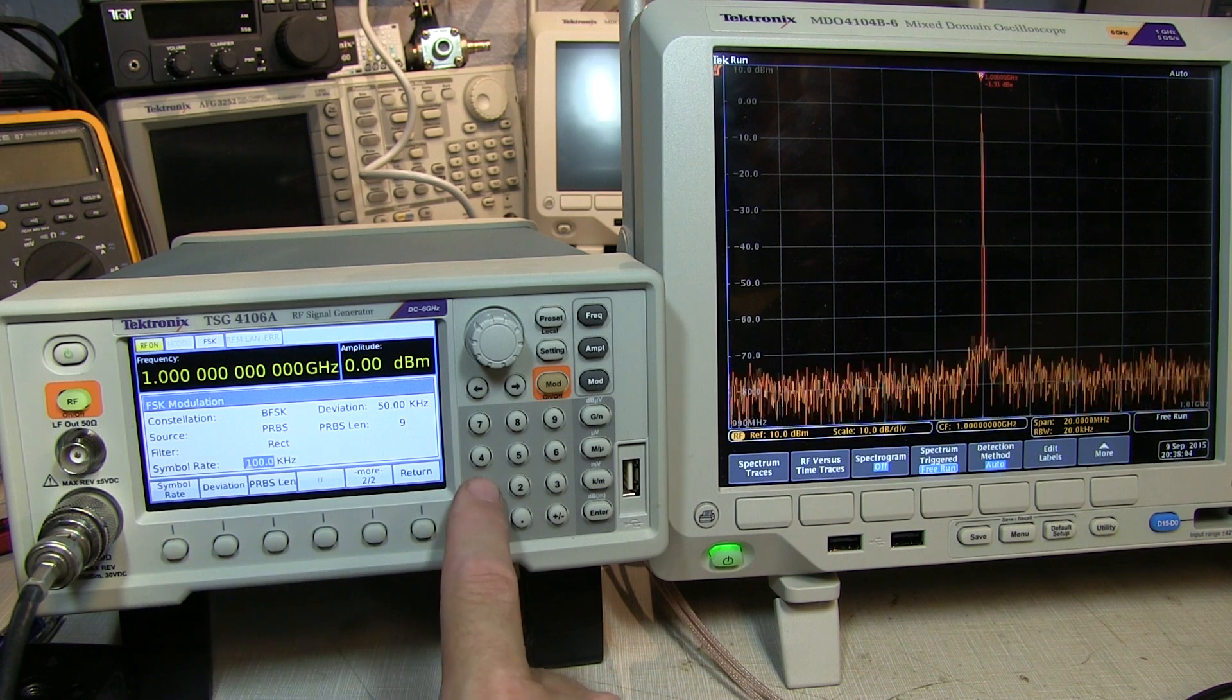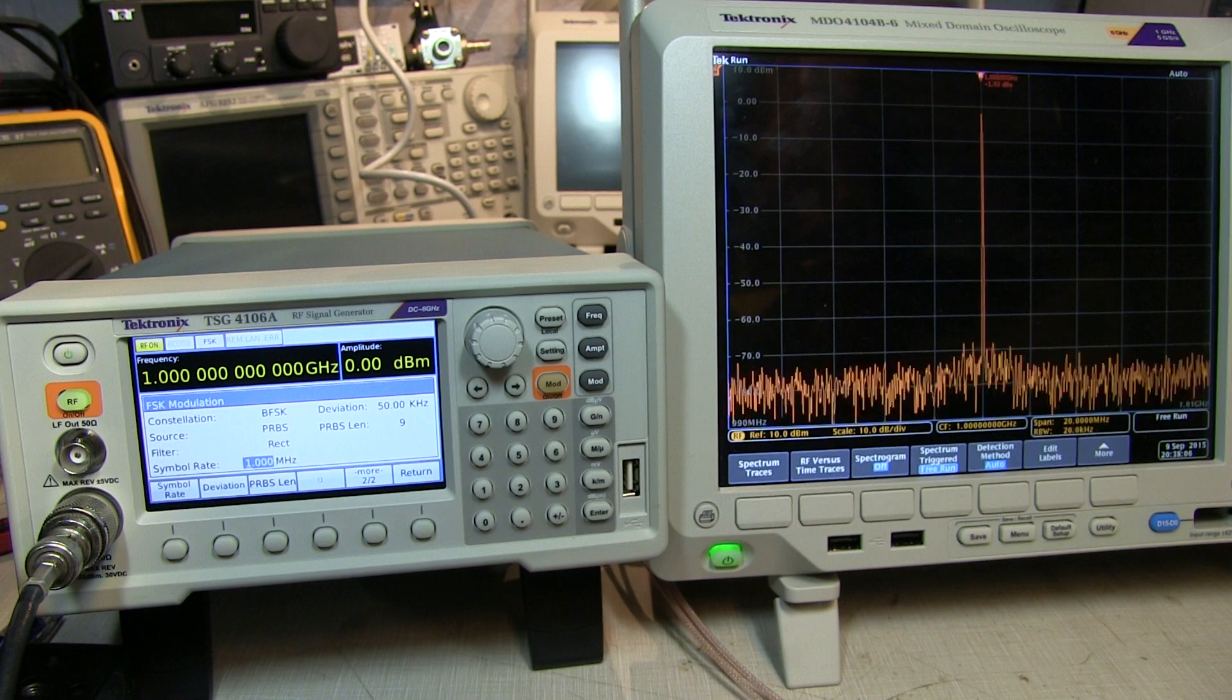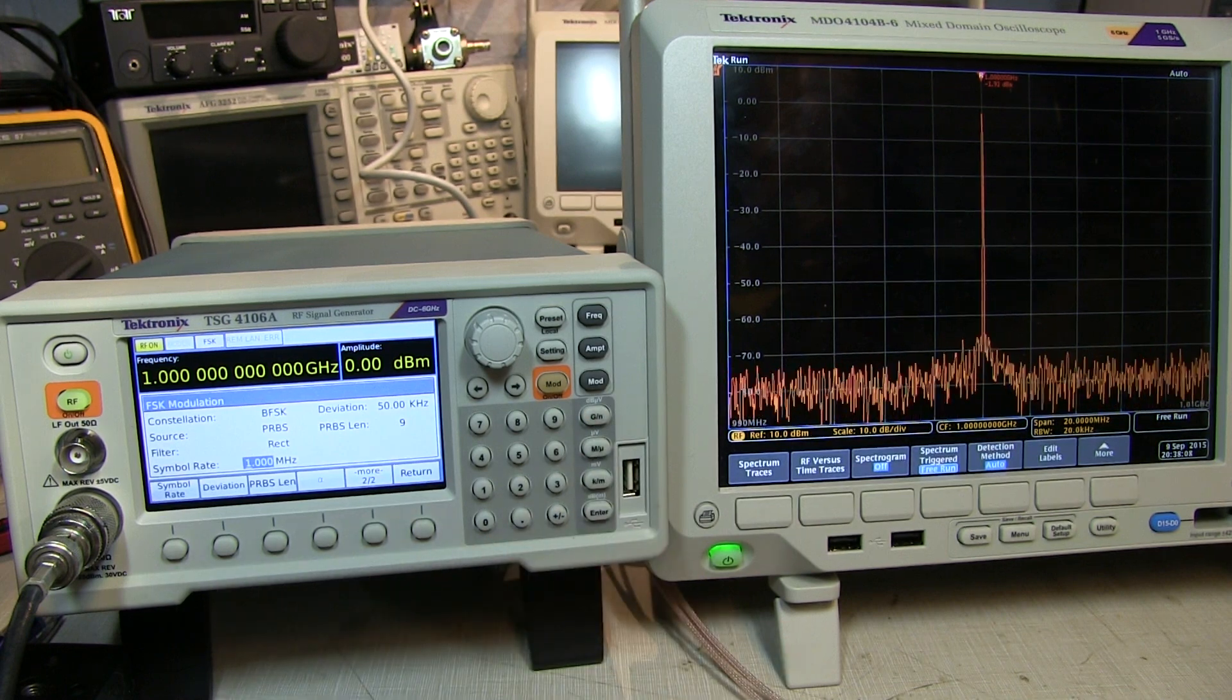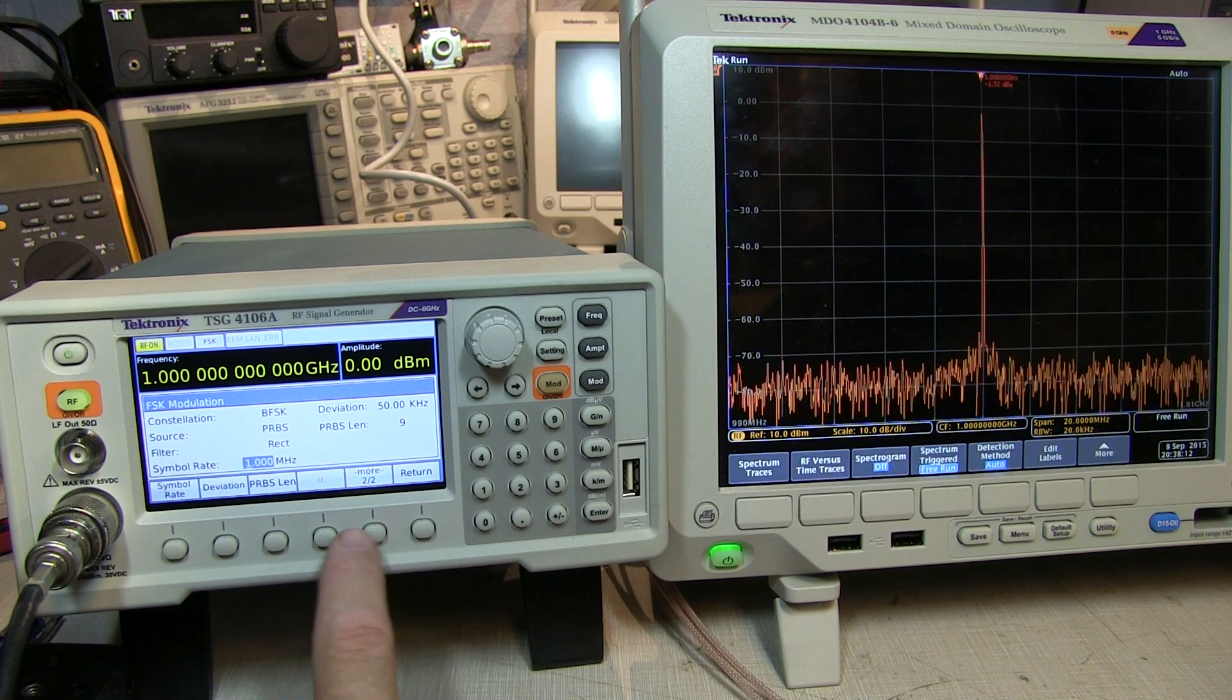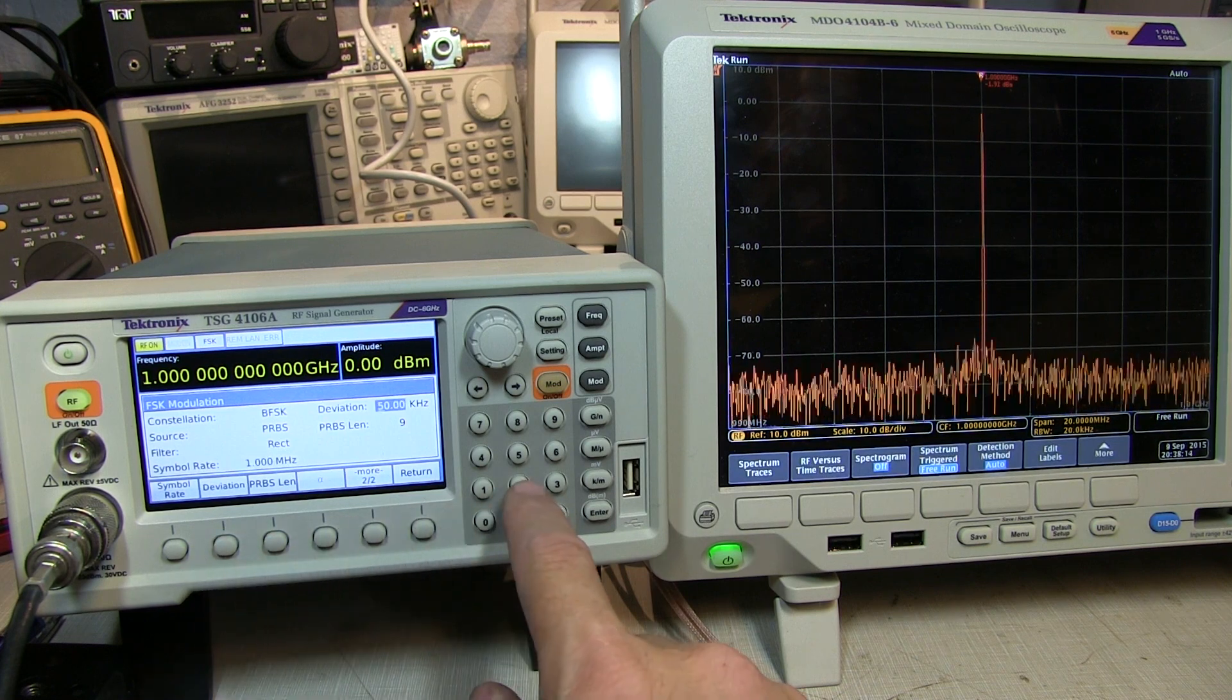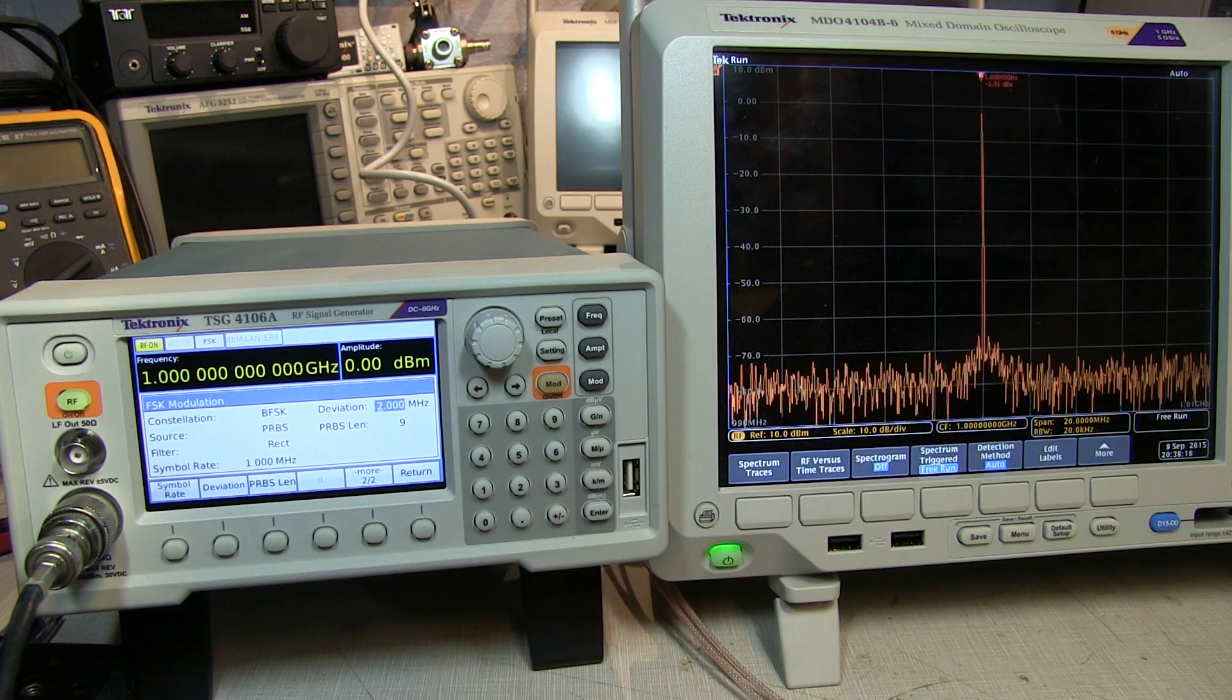We'll set the symbol rate, let's go to, say, one mega symbol per second. So, we'll change at a one megahertz rate at the max, based on that PRBS data. And let's change the deviation to, say, two megahertz or so.